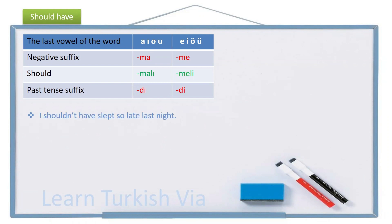I shouldn't have slept so late last night, but I did, unfortunately. So, I, ben, last night, dün gece, last night, yesterday night, the same, dün gece. So late, so, çok, late, geç.